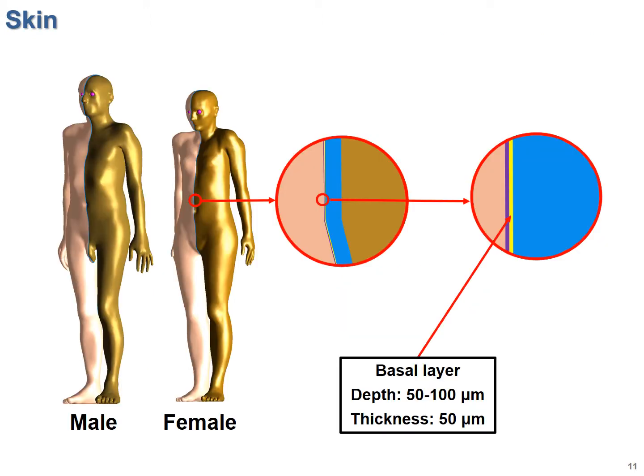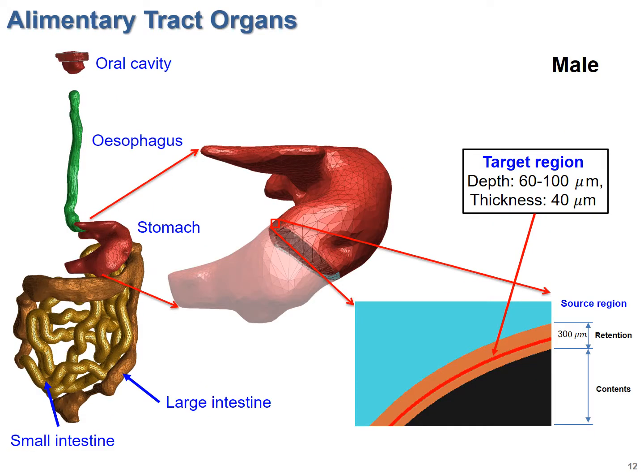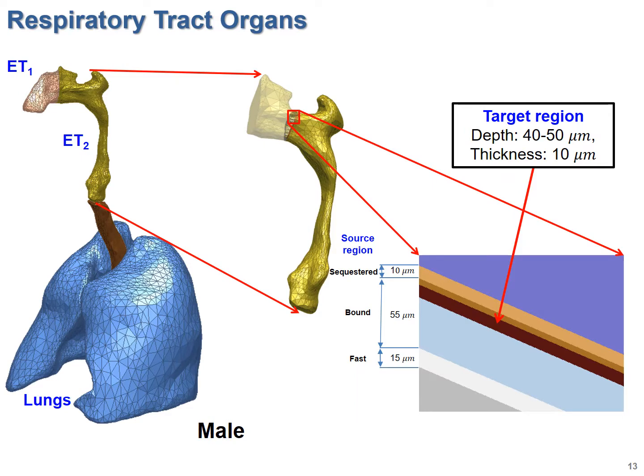Second, we modeled a 50-micrometer radio-sensitive basal cell layer in the skin model, which means that now we can calculate skin doses in these target layers just as recommended by ICRP Publication 116. Similarly, we also included micron-scaled layers for source and target regions in alimentary tract organs and in respiratory tract organs as well.